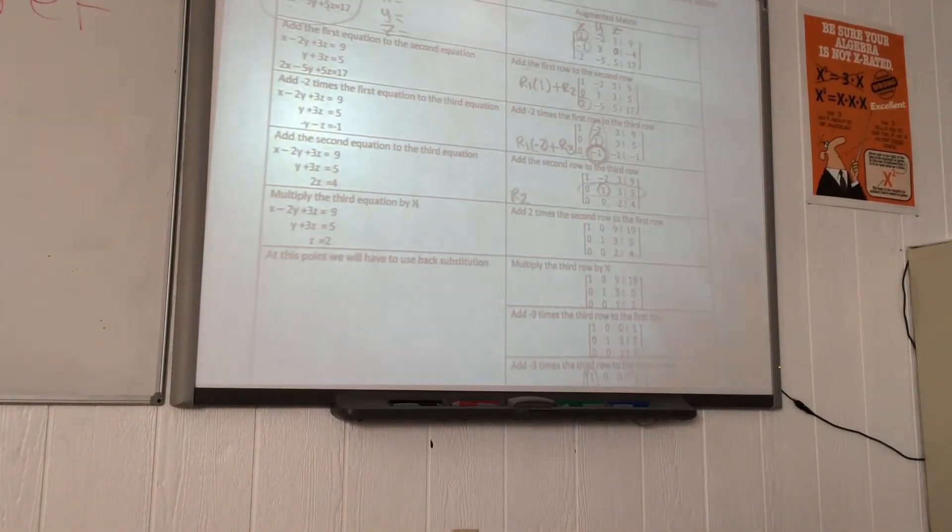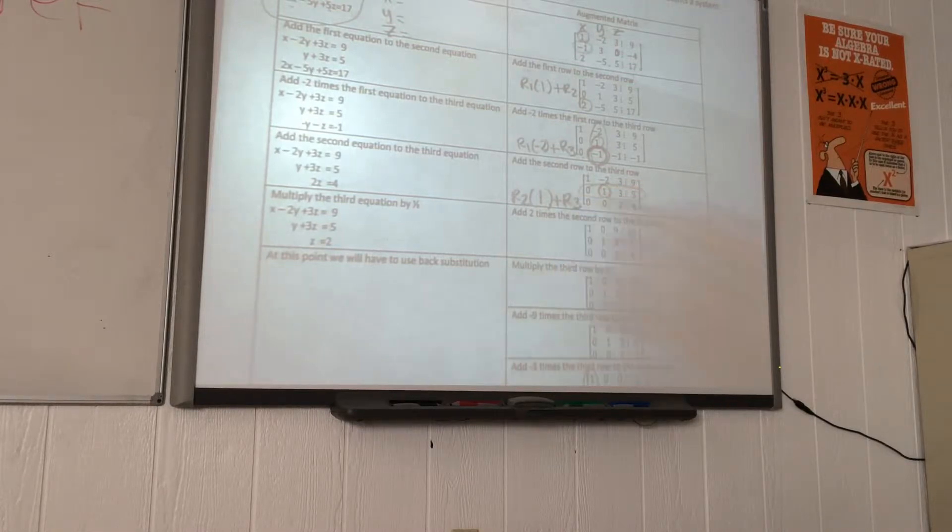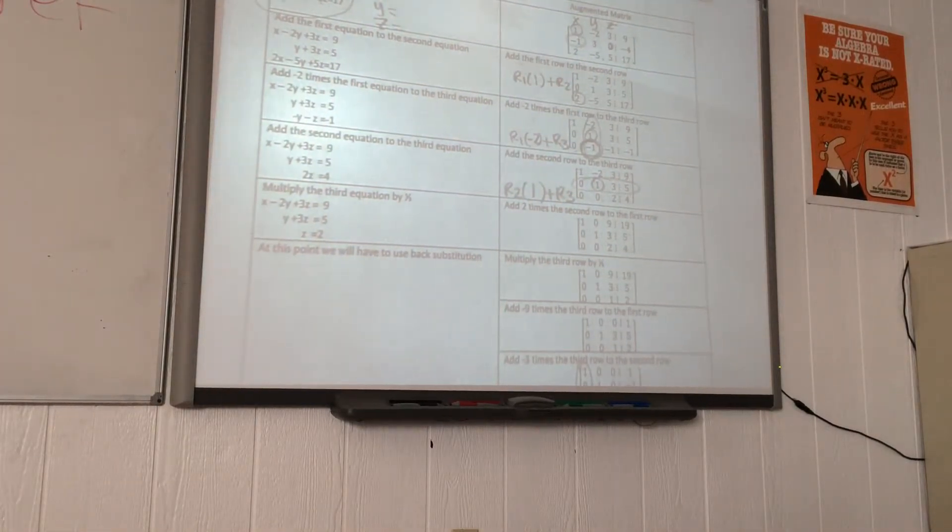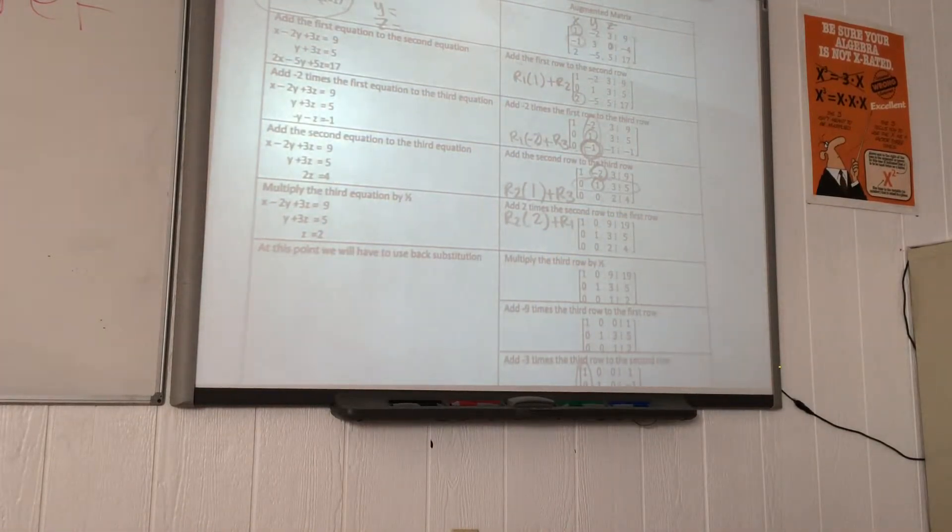The leading row is the one that contains the 1 once you move on to the next column. So R2 times the additive inverse of negative 1, which is positive 1, and then we add R3. After that, the next step is to make this negative 2 turn into a 0. We use the same leading row, which is R2, times the additive inverse of negative 2, which is positive 2, and then we add R1.